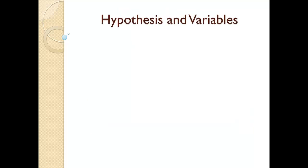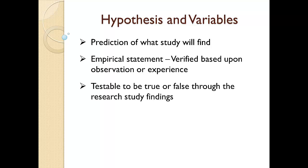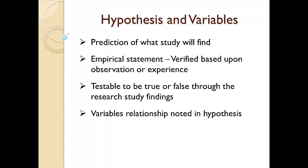Before we jump into our first example, I think it is important to understand the relationship between variables and hypothesis statements. A hypothesis is a prediction of what we believe the study will find, or the answer to the research question. A hypothesis is an empirical statement that can be verified based upon observation or experience, and it is testable to be true or false through the research study findings. Since our hypothesis makes a prediction, it is only logical that our variables have to be included in the hypothesis. Our hypothesis is where we show the relationship between the independent and dependent variables. Therefore, using a hypothesis as a starting point for each example allows us to see how variables operate in a research study and how they are part of the hypothesis. Okay, enough of the textbook stuff — let's look at some real examples.